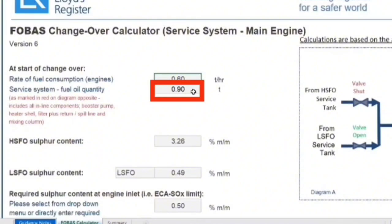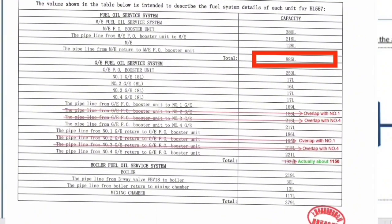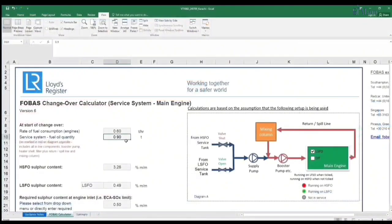The most important data you have to input here is the system fuel quantity. We have to get from the official documents the quantity of fuel in the system. The remaining contents of used oil and new oil also need to be filled in. After that, you will know how many hours are required for the changeover.